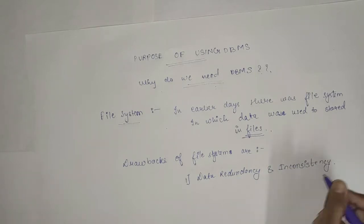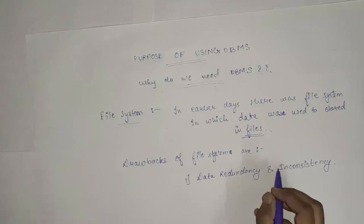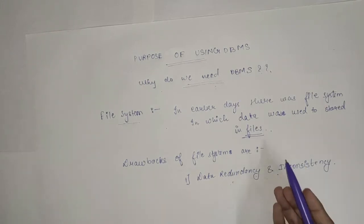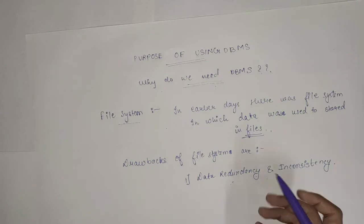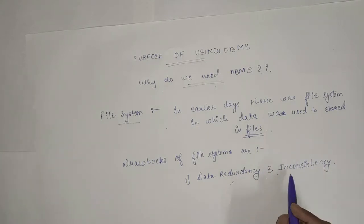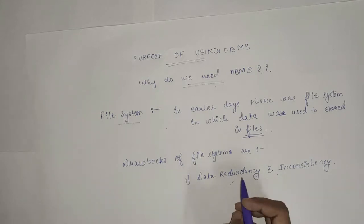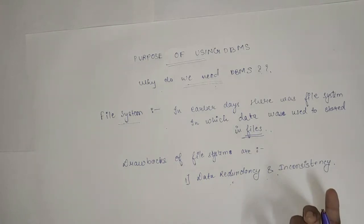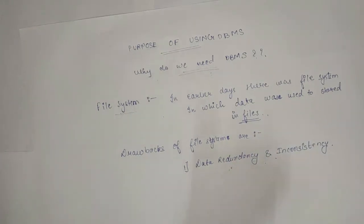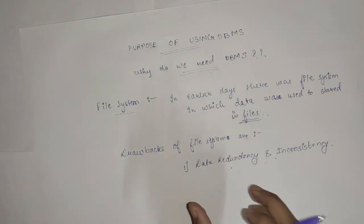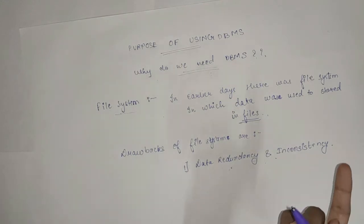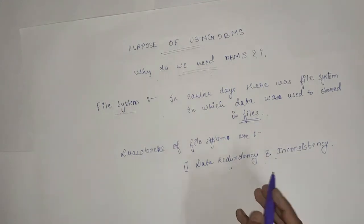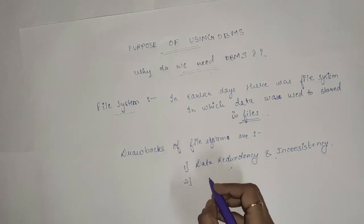This is the first major drawback of file system. In this, what happens is there were multiple file formats and duplication of information in different files. The problem was that if some data is the same in two files, that data becomes problematic. The second drawback is difficult to access data.